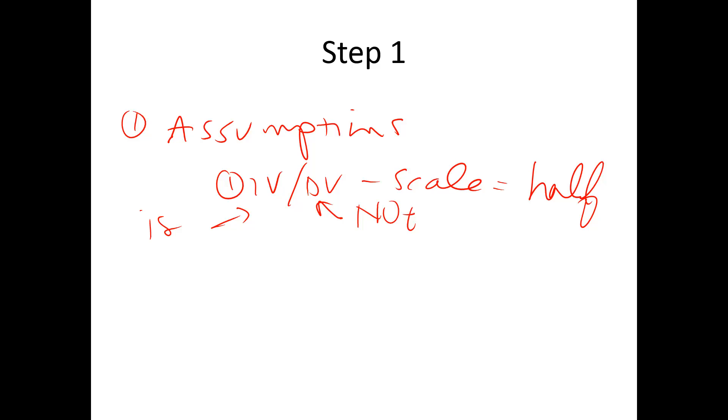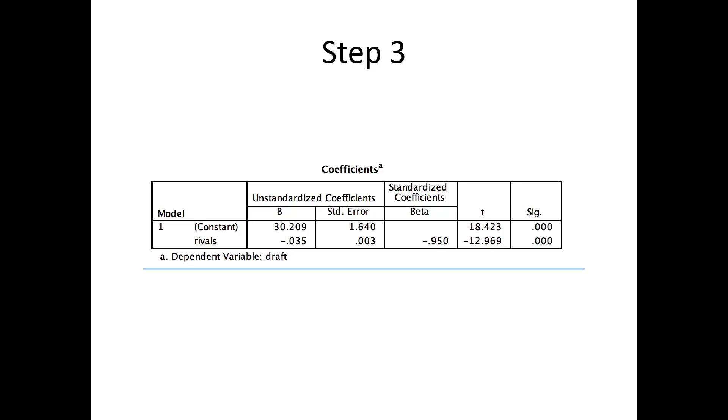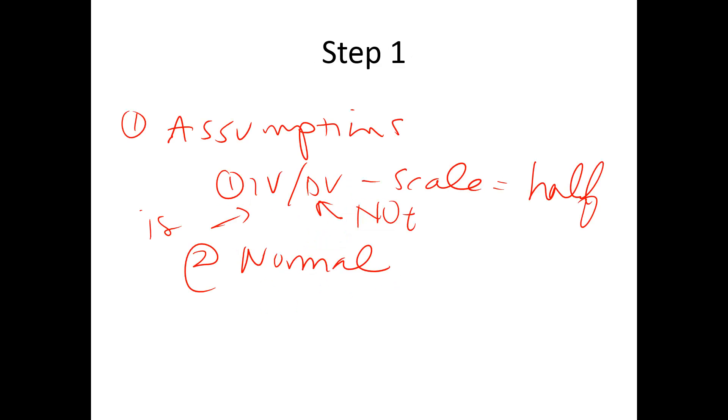If that happens in a real research situation, you'd have to do a different type of regression because having a DV that's ordinal is not good. Second one is that they're normal. I don't remember how many people we got in the study. I think we have 20, so N is less than 30, so no.